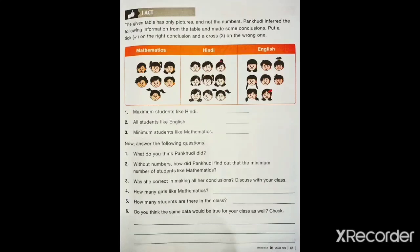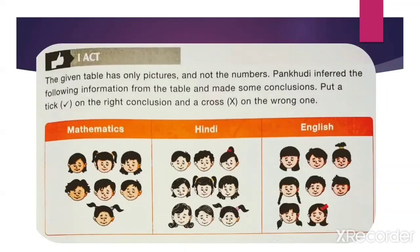Children, open page number 45 — this page you also have to solve with me in your maths textbook. The question is: the given table has only pictures and not numbers. Pankhudi inferred the following information from the table and made some conclusions. Put a tick on the right conclusion and a cross on the wrong one. Here is the information collected by Pankhudi. The three subjects are Mathematics, Hindi, and English, and the information is represented in the form of pictures. By observing these pictures, we have to find out the conclusions. You have to do this with me.